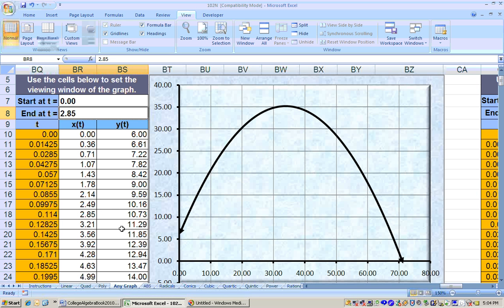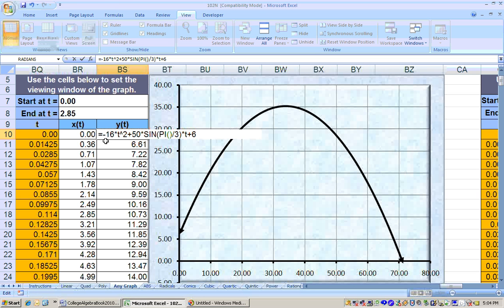Now I already have those typed in, so let's take a look at how I typed them in. This is the toughest one to type in as your y of t. It was negative 16. I typed in equals negative 16 times t, carried up, squared, plus 50 times sine of pi, open parenthesis, closed parenthesis, divided by 3, closed parenthesis, times t plus 6.